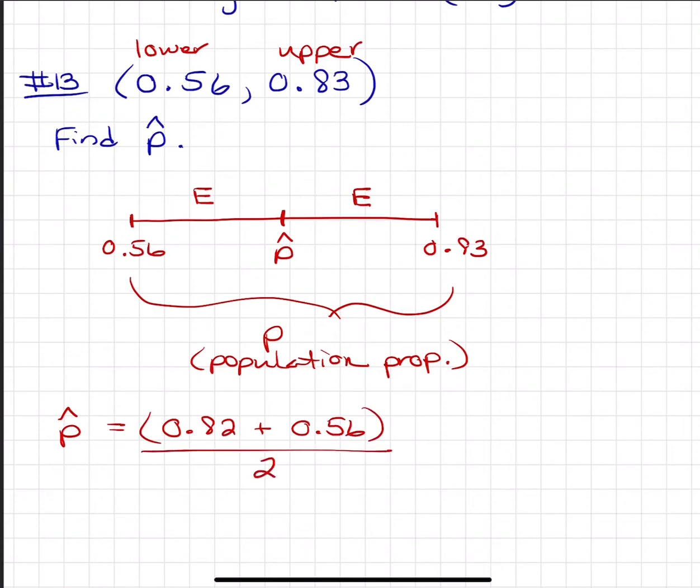So you're going to add them and divide by 2, and that will find the center of those two endpoints. Be careful if you're punching this into a calculator; make sure you either put parentheses around the top or press enter after you add the sum and then divide by 2.